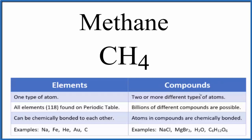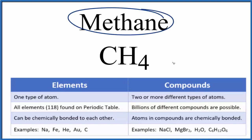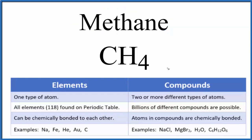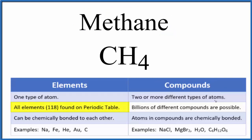All of the elements are found on the periodic table. So if you look for methane on the periodic table, you won't find it — it's not on the periodic table. That's because it's a compound, and it's made up of two or more different types of atoms. The periodic table lists all of the elements, all the individual atoms — one type of atom. So methane is not on the periodic table.